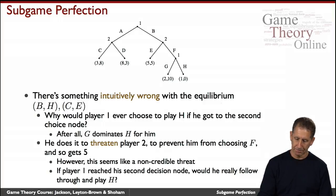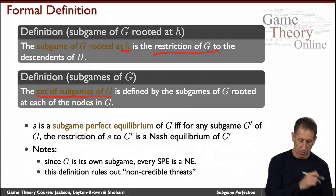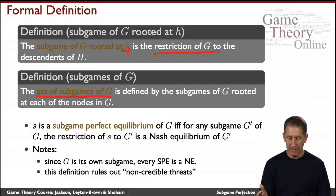So we see that captures the intuition of non-credible threat. Notice also that one special case of the sub-tree is the entire tree, so subgame perfect equilibrium has got to also be a Nash equilibrium.